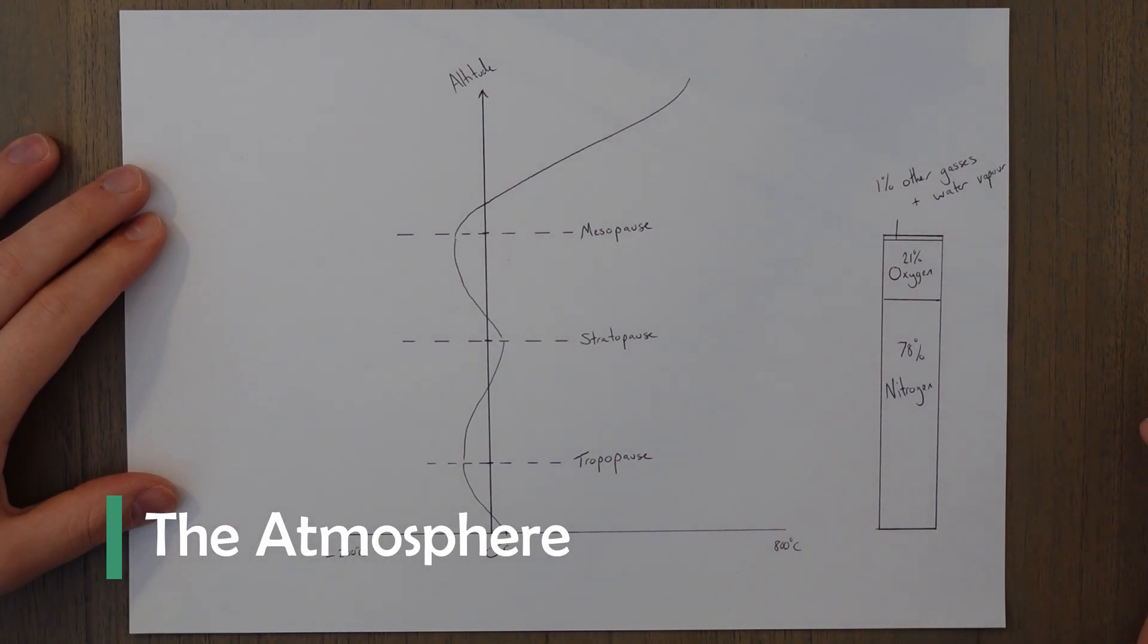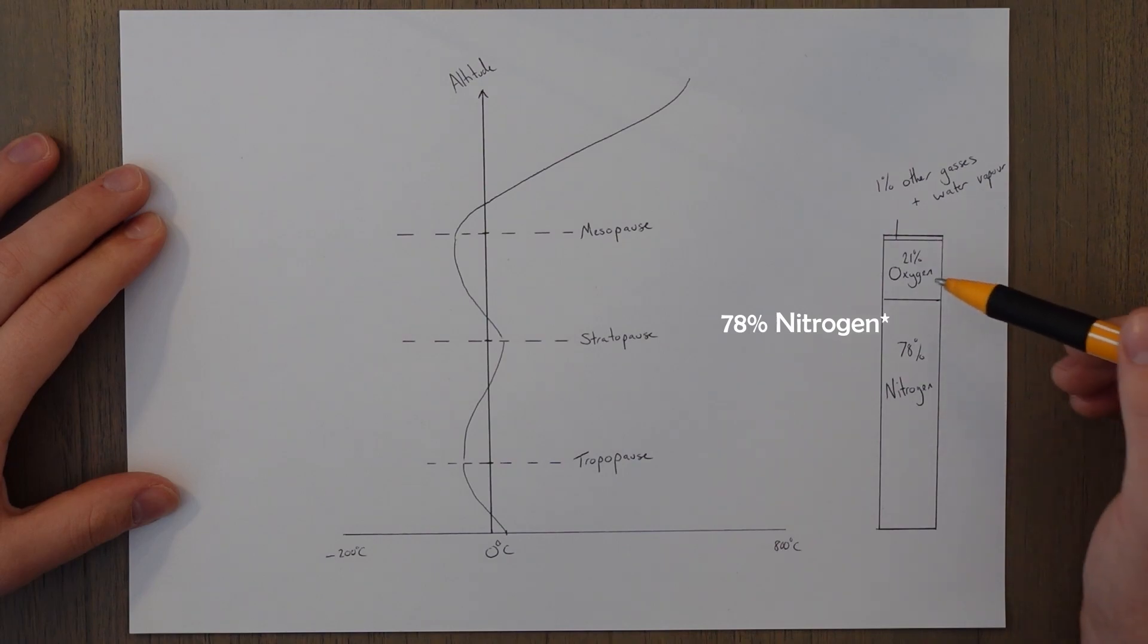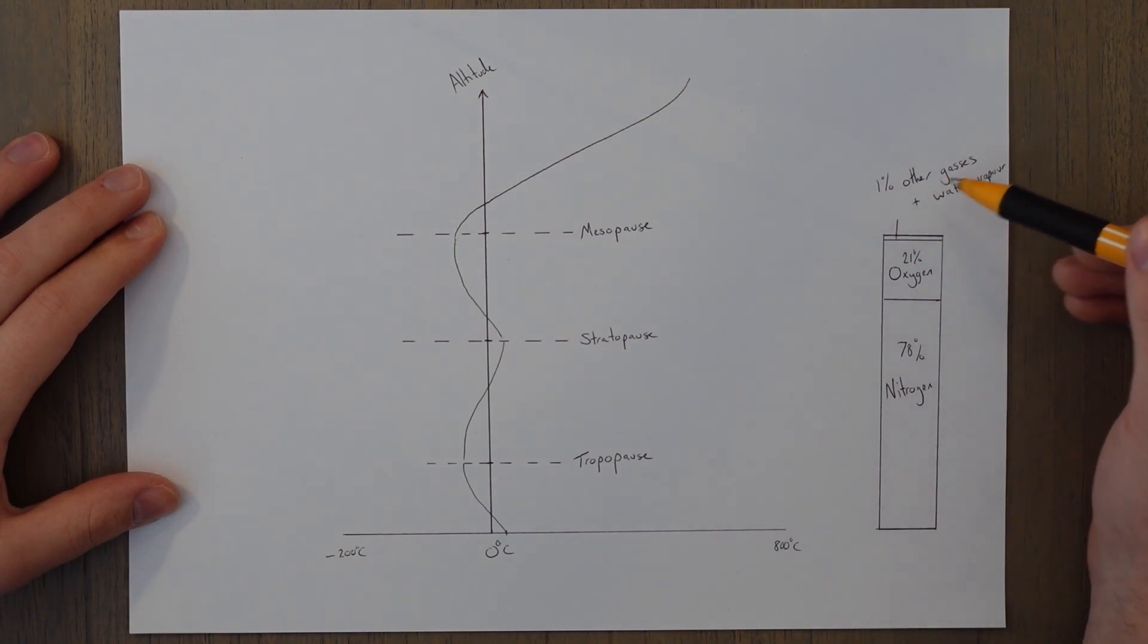The atmosphere contains a mixture of gases mainly consisting of 78% nitrogen, 21% oxygen, with the remaining 1% being other trace gases and water vapor.